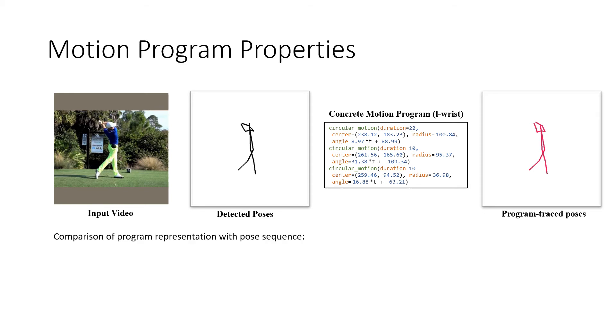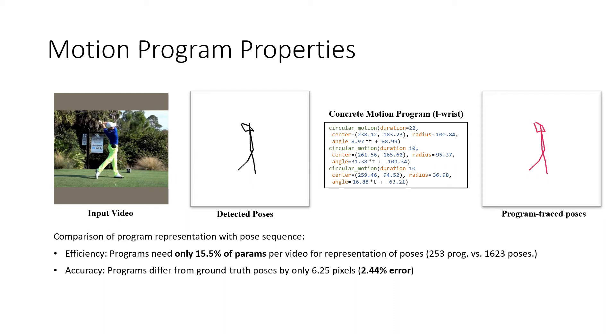On the full dataset, we observe that motion programs have a few favorable properties. They are efficient, needing only 15.5% of the parameters for representing pose sequences, while also being accurate with only 2.4% drop in accuracy. Motion programs also smooth out the noise in the poses, leading to more temporally consistent poses.